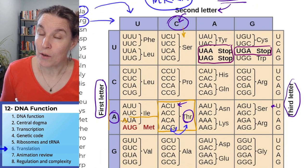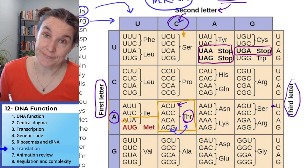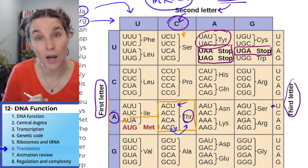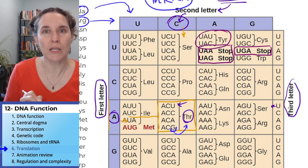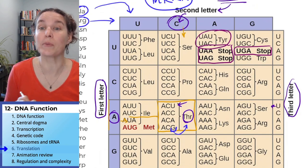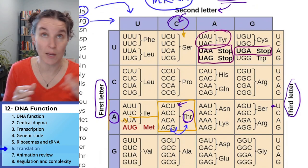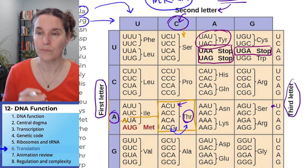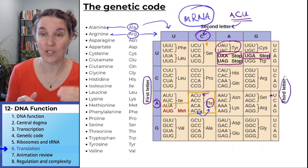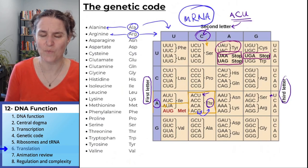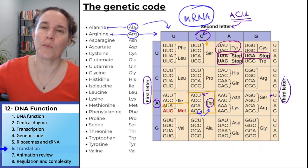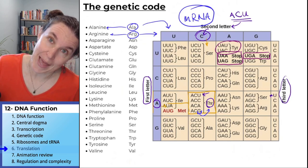Imagine a stop codon mutation where instead of coding for tyrosine, you code for stop. That's going to be a big deal — a mutation that is probably going to have an impact of some sort on the organism's function. I think we're ready to actually walk through and visualize this process and see all of it in animated style. Be right back.